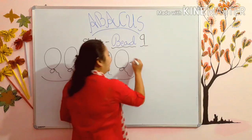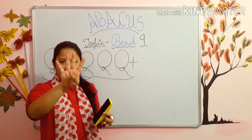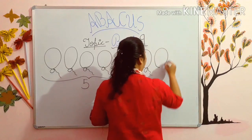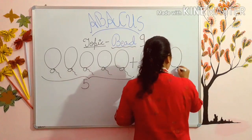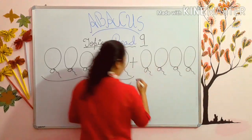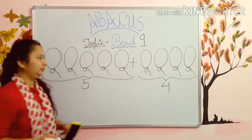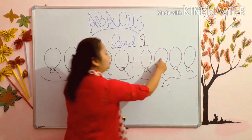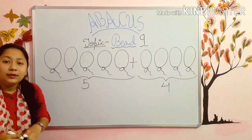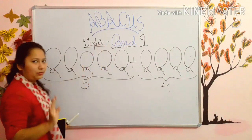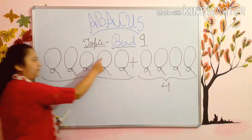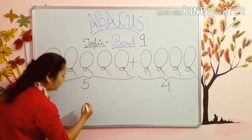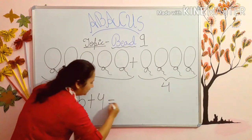Then we take 4 more balloons: 1, 2, 3, 4. See: 5 balloons, 6... 1, 2, 3, 4 — 4 balloons. Now count them all from here to here: 1, 2, 3, 4, 5, 6, 7, 8, 9. So kids, 5 plus 4 is equal to 9.